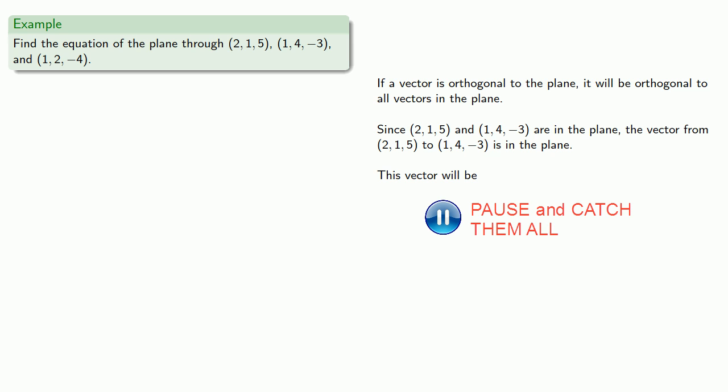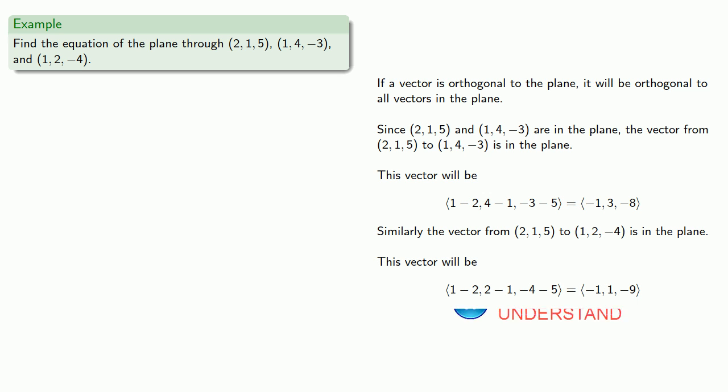Similarly, I might go from (2, 1, 5) to (1, 2, -4), and the vector from (2, 1, 5) to (1, 2, -4) is in the plane. And this vector will be, and that gives me two vectors in the plane.